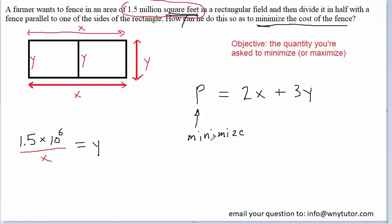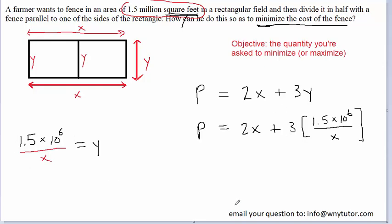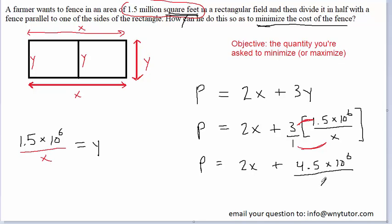Here is where our previous result comes in handy. We take the expression for y and substitute it into our objective equation. To simplify, we put the 3 over 1 and multiply: 3 times 1.5 times 10 to the 6 in the numerator, over x in the denominator. That gives us a perimeter equation of 2x plus 4.5 times 10 to the power of 6, all divided by x.